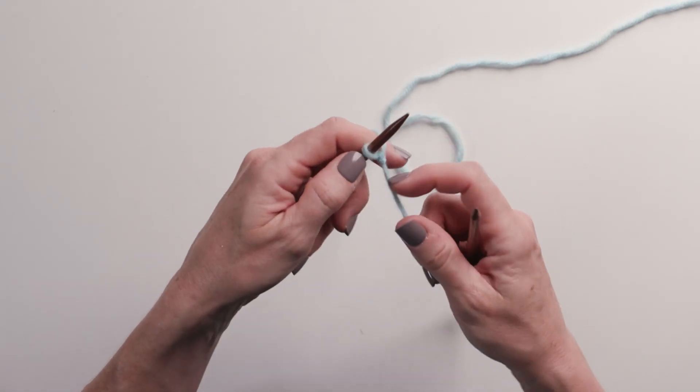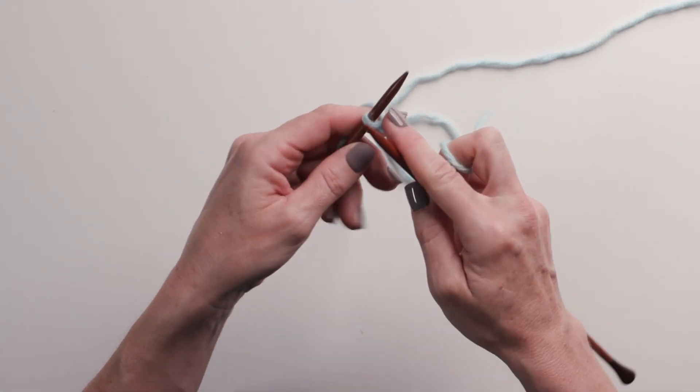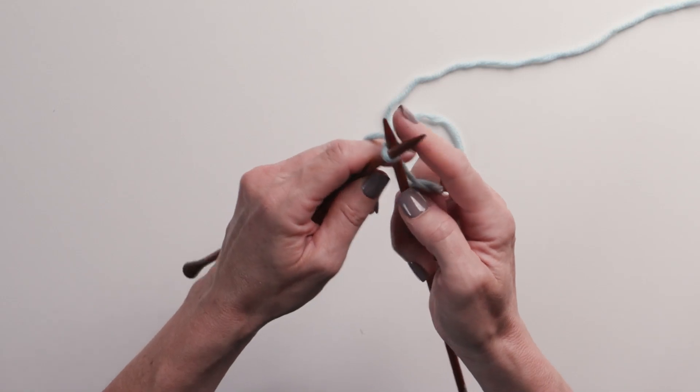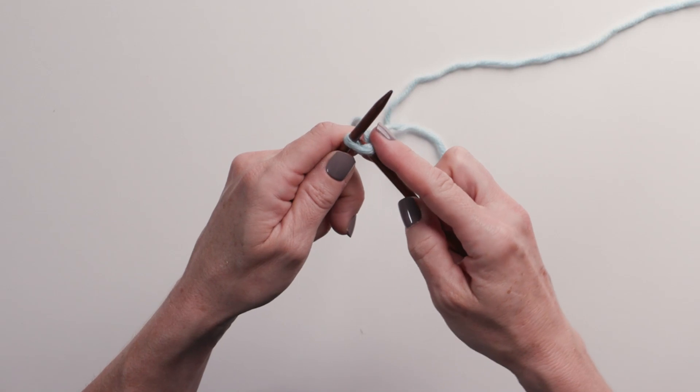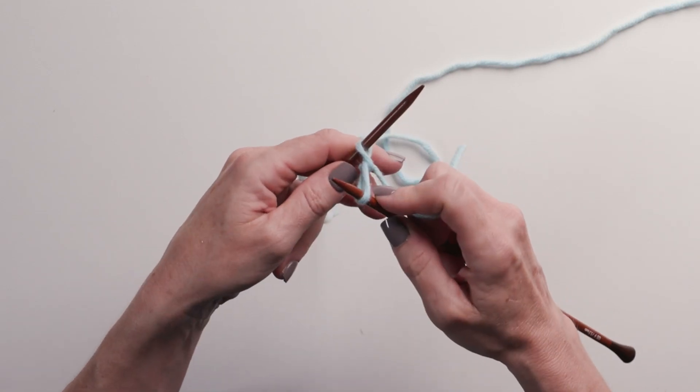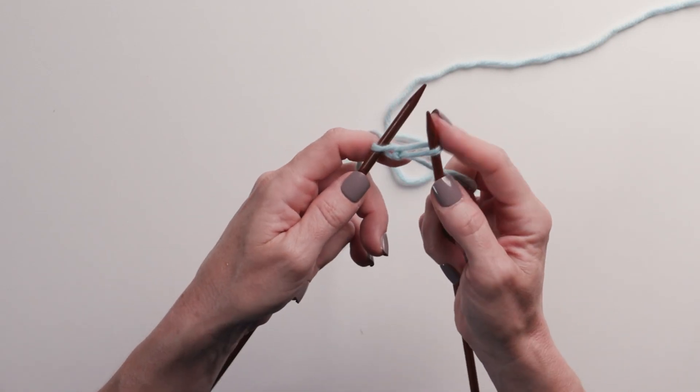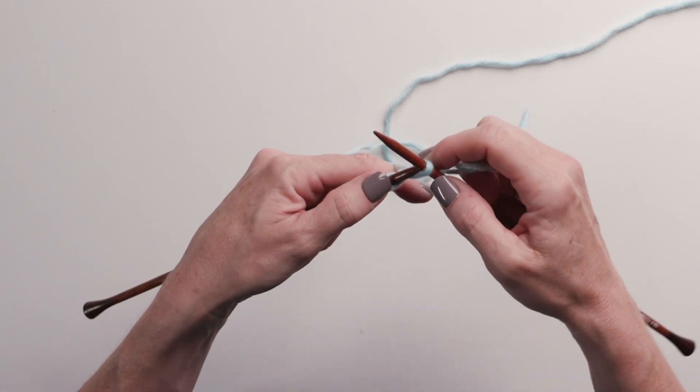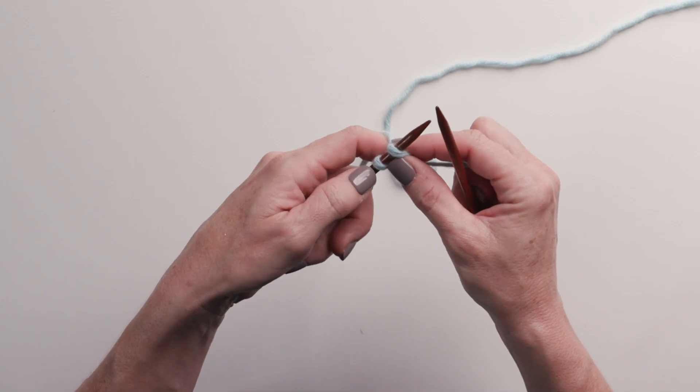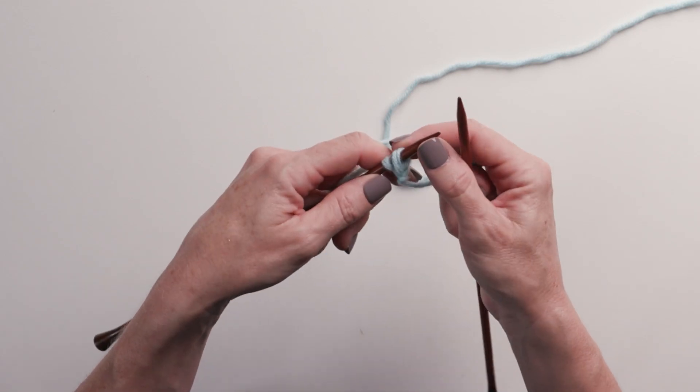Then you want to tension your yarn. Go into that one stitch, front to back as if to knit. Wrap your yarn, bring it through, and rather than transferring that stitch to the right-hand needle, you're just going to put that loop back on the left-hand needle. And there's two stitches.